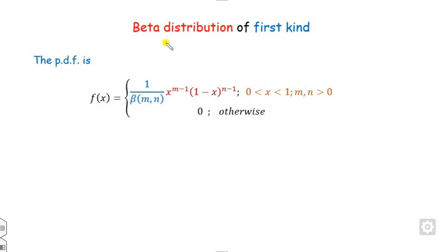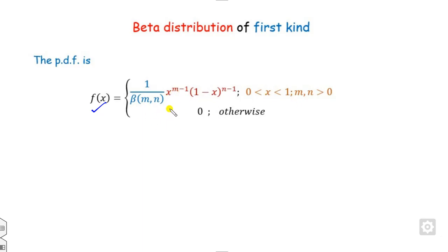As all of you know, the beta distribution of the first kind has a probability density function defined as 1 upon beta(m, n) times x raised to power m minus 1, and so on. Here the two unknown parameters are m and n.